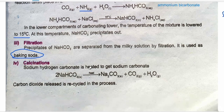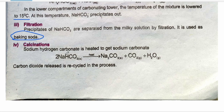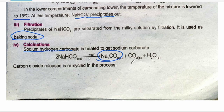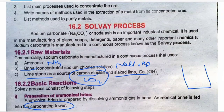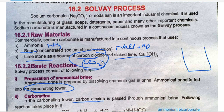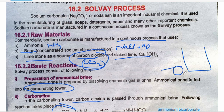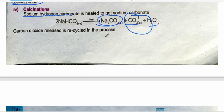After filtration, the next step is calcination. In calcination, the sodium hydrogen carbonate — sodium bicarbonate — in solid form is heated. When heated, it produces sodium carbonate, Na₂CO₃, along with carbon dioxide gas and water. Notably, the carbon dioxide produced here is recycled back into the carbonating tower for use in step two. This demonstrates why the Solvay process is a continuous process — by-products are reused.